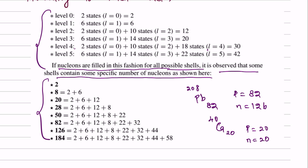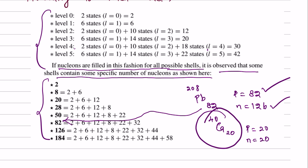For example, there is lead. If you look at the proton, there is 82. Then 82 is a magic number, so the nucleus is more stable. The neutrons are 126. The proton is 82 and the neutron is 126. Then 126 is a magic number, so lead is more stable. For example, calcium-40: the proton is 20 and the neutron is 20. Then the two are magic numbers, so calcium is more stable.